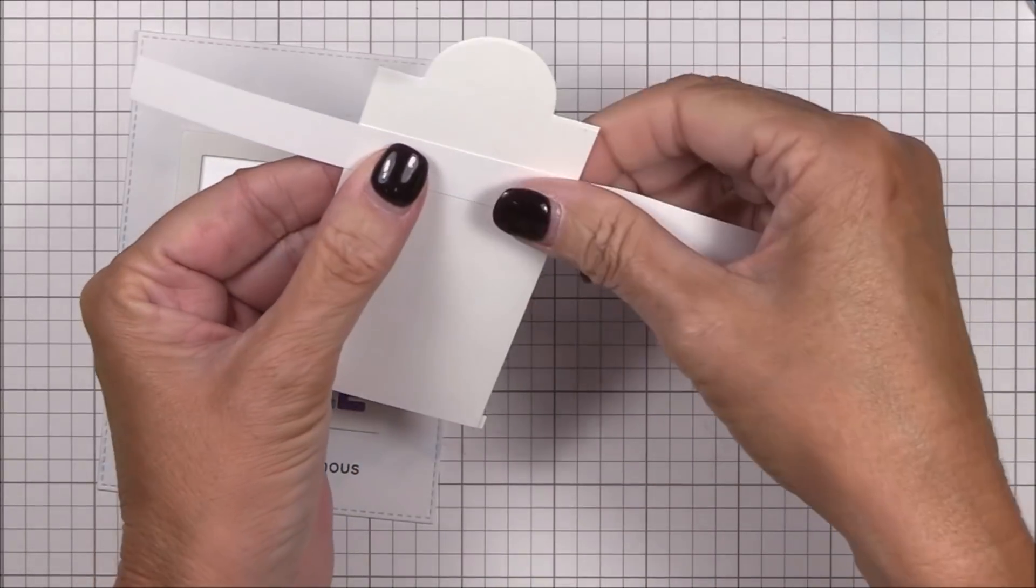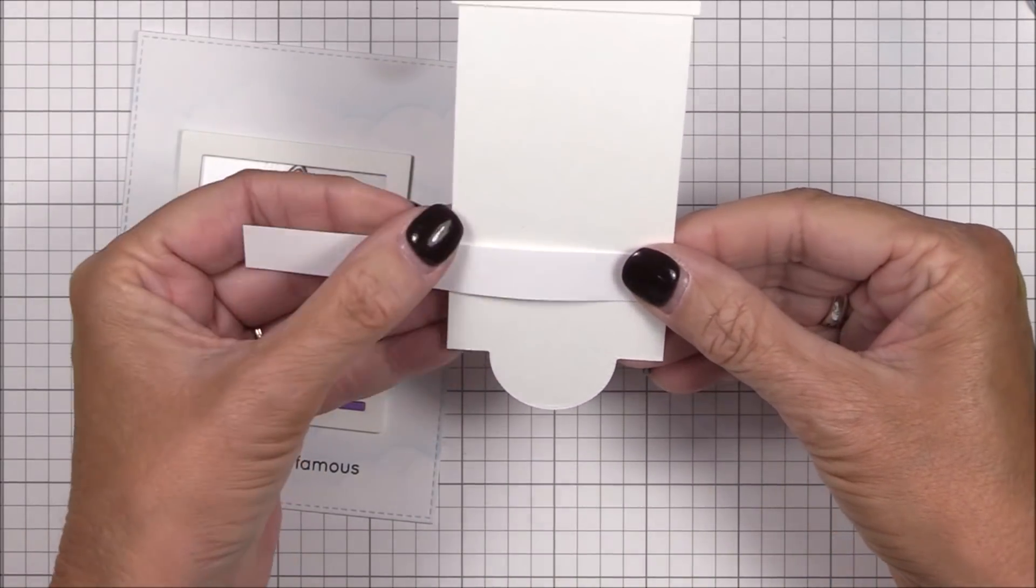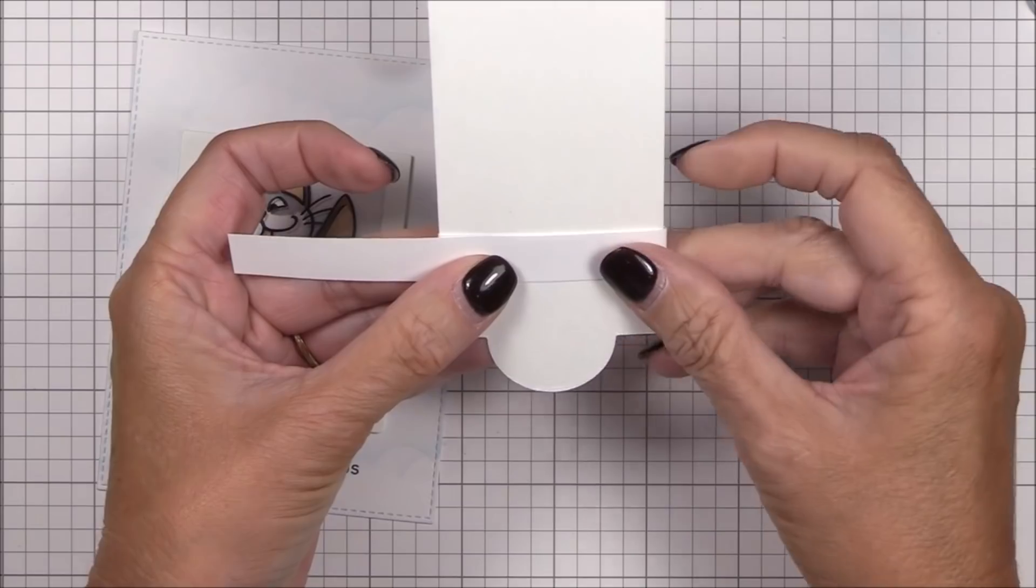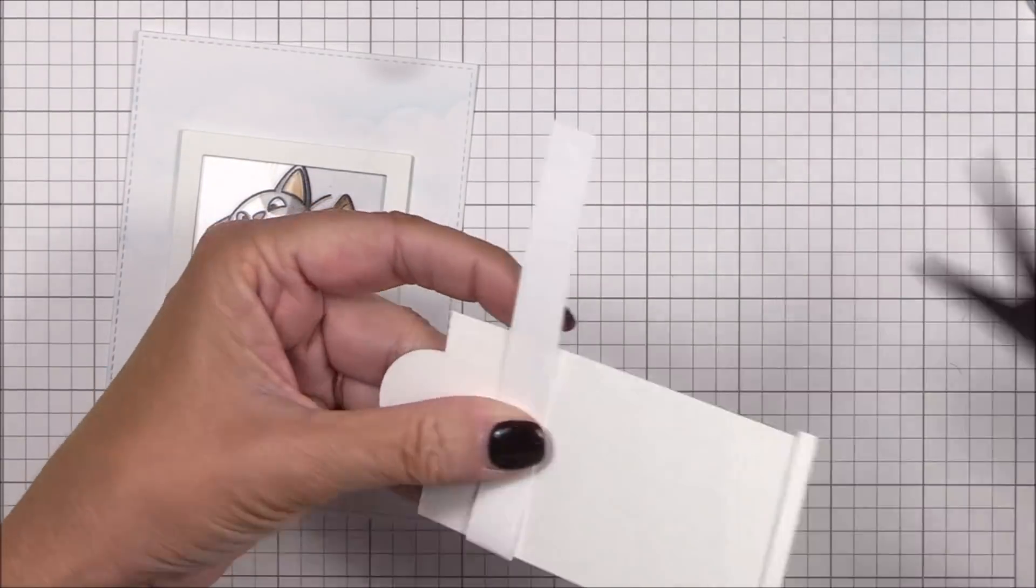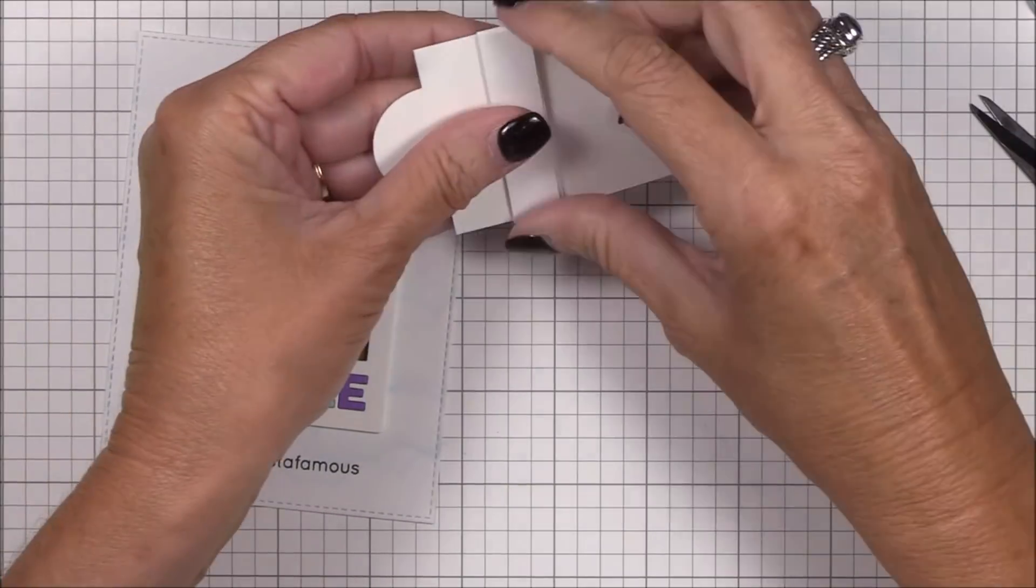To keep the slider panel from shifting when I pull it up, I'll create a sleeve. I've trimmed a half inch strip of printer paper that I'm wrapping around the slider panel. I'll trim off the excess, adhere the back tabs with liquid adhesive.